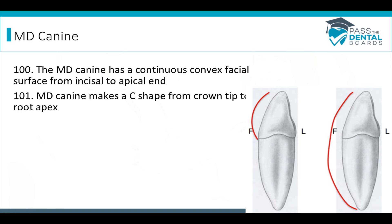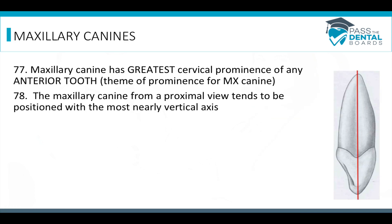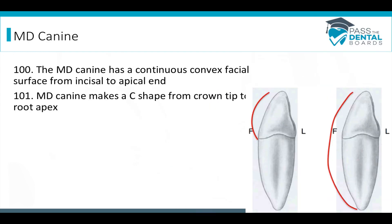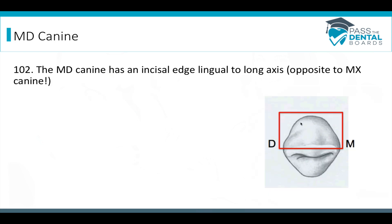The mandibular canine has a continuous convex facial surface from incisal to apical — it makes a C shape from crown tip to root apex. That is different from the maxillary canine's greatest cervical prominence — don't get those two confused. The maxillary has the greatest cervical prominence of any anterior tooth, while the mandibular canine is the most convex. The mandibular canine also has an incisal edge that's lingual to the long axis, opposite to the maxillary canine, so from the incisal view you can see more of the facial than the lingual.